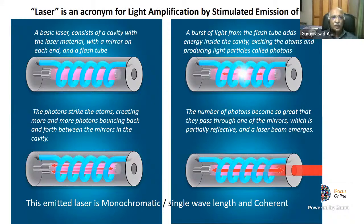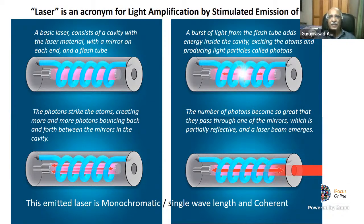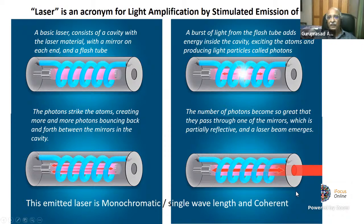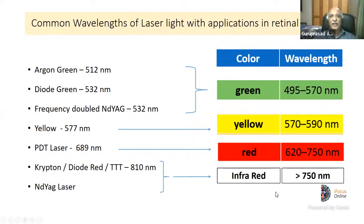Laser is an acronym for Light Amplification by Stimulated Emission of Radiation. A basic laser consists of a cavity with laser material, a mirror on each end, and a flash tube. The burst of light from the flash tube excites atoms, producing photons. These photons bounce back and forth between the mirrors, building energy, and emerge through the partly reflective mirror as a monochromatic, coherent laser beam.